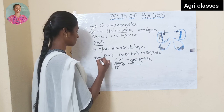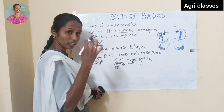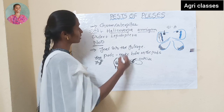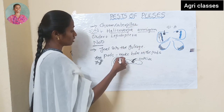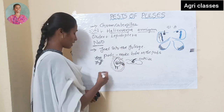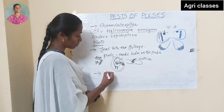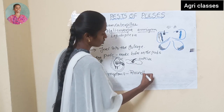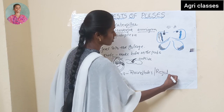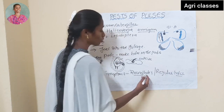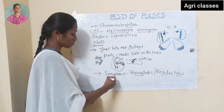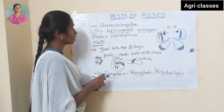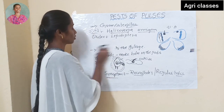This is the most important point: the pest thrusts its head into the pod while the remaining body is outside — this symptom is characteristic of Gram Caterpillar. Due to this nature of damage, we can see symptoms like round holes or regular holes on each pod. These are the nature of damage and symptoms of damage.